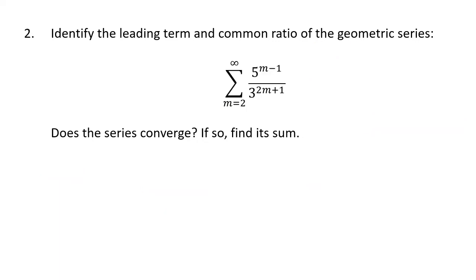Here's another geometric series, a little bit more complicated. First thing to notice is that this series starts at m equals 2, which is certainly allowed. When m equals 2, the top of the fraction is 5 to the 2 minus 1, which is 5 to the 1st, which is 5. On the bottom we have 3 to the 5th — since 2 times 2 is 4 plus 1 is 5, and 3 to the 5th is 243. So the leading term a is 5 divided by 243.